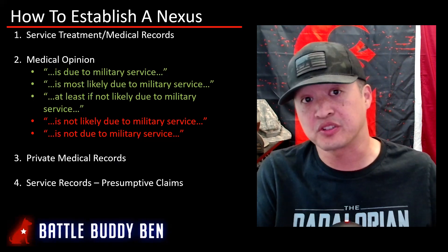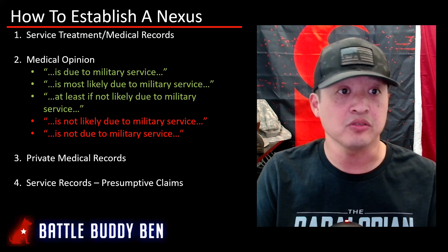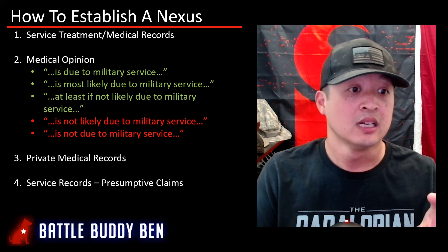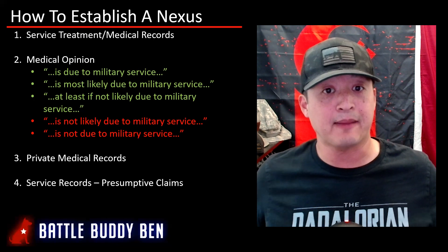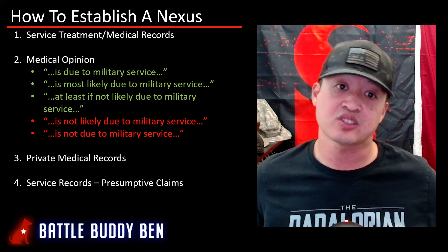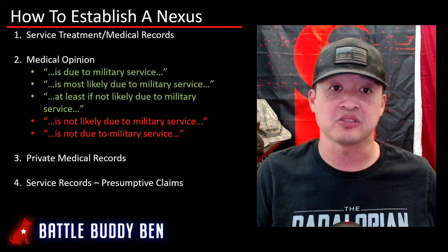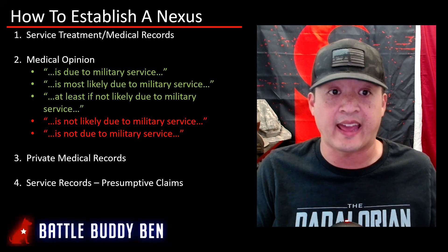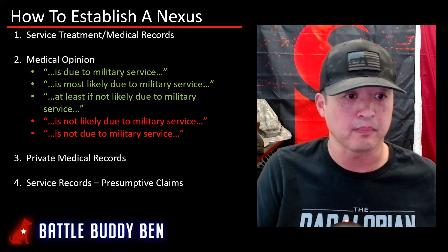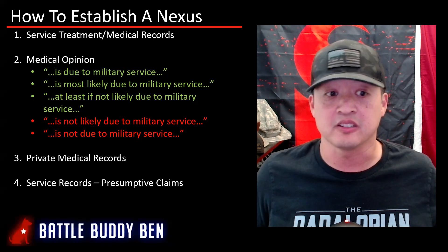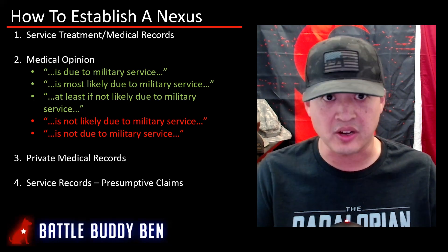So how do you establish a nexus? First, your service treatment or medical records. Number two, your medical opinion — I'll come back to that. Number three, your private medical records. If there's a gap between when you got out of service and when you filed your claim — such as 10 or 20 years — you can use private medical records to establish that you've had the disability since you got out, building that story back to service. And your service records for presumptive claims.